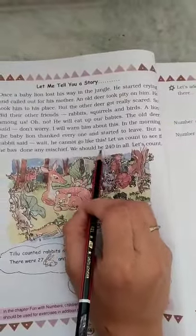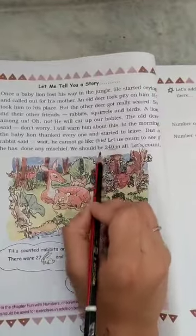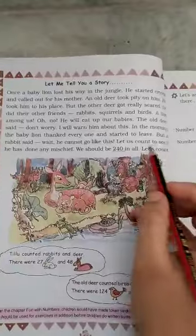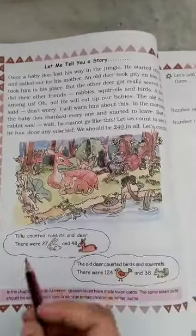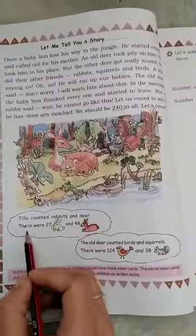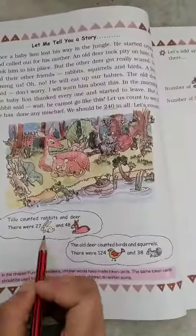We should be 240 in all. We have counted how many animals were. Let us count. Tillu counted rabbits and deer. There were 27 rabbits and 48 deer.